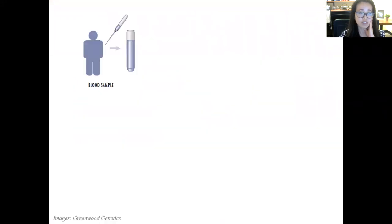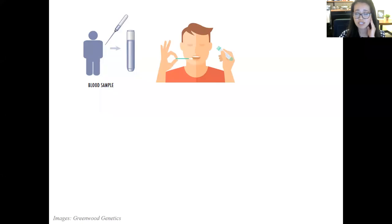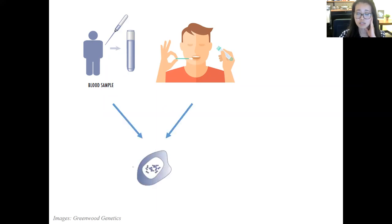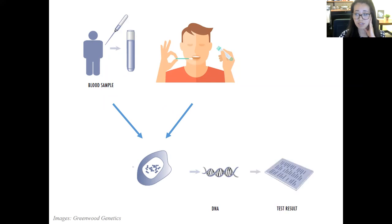Just so we're all on the same page — clinical genetic testing is typically done on a blood sample or a saliva sample. We've been using saliva samples a lot during the era of COVID because patients do not have to come to the hospital. You're either getting leukocytes or fibroblasts, and the clinical genetic testing lab extracts the DNA, analyzes whatever portion they're interested in assessing, and produces a test result report which gets shared back to the clinician who ordered the test.